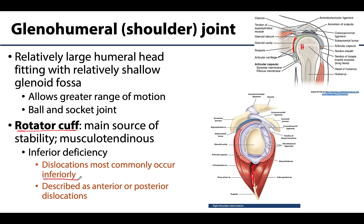Clinically, shoulder dislocations are very rarely described as inferior dislocations. They are almost always referred to as either an anterior dislocation — the most common type — or a posterior dislocation. This describes where the humeral head ends up: more anterior or more posterior than normal after the dislocation.